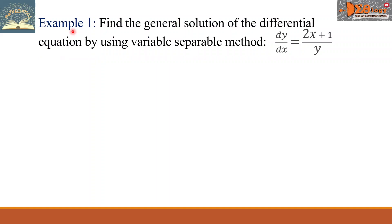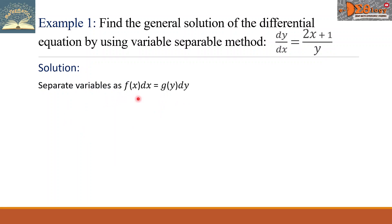Example 1: find the general solution of the differential equation by using the variable-separable method. Our equation is dy over dx equals (2x plus 1) all over y. Let us separate variables as f of x dx equals g of y dy. By cross multiplication, it becomes y dy equals (2x plus 1) dx.